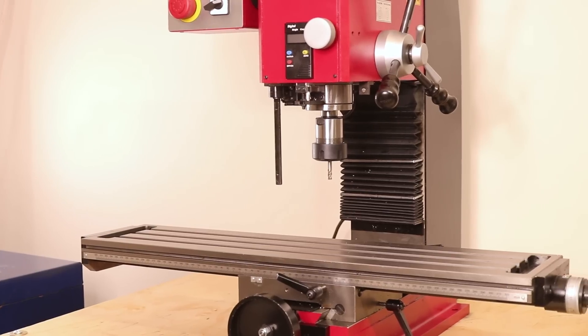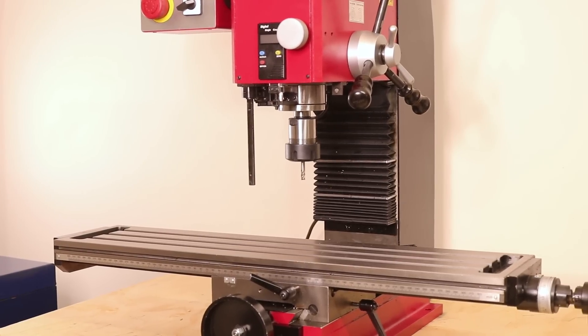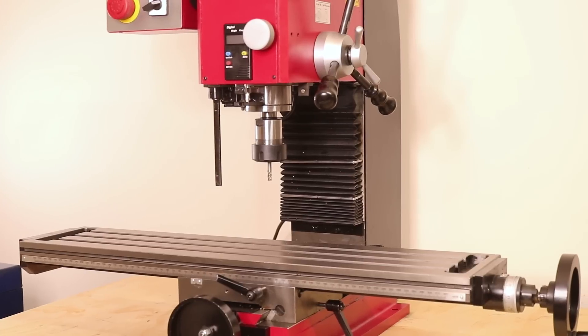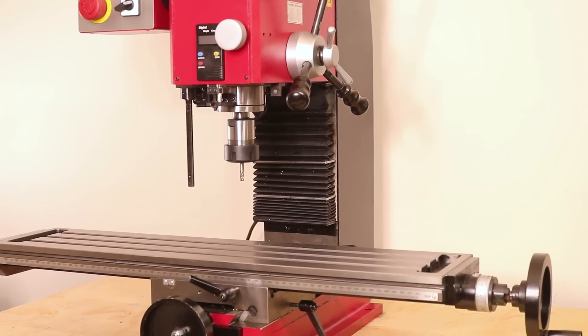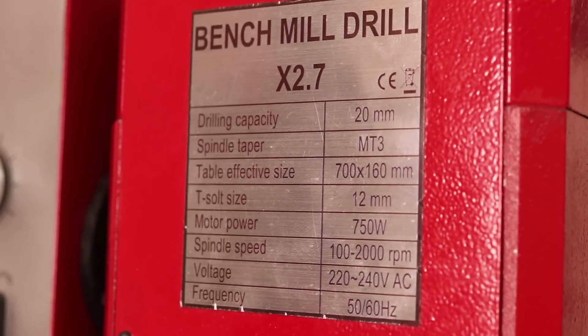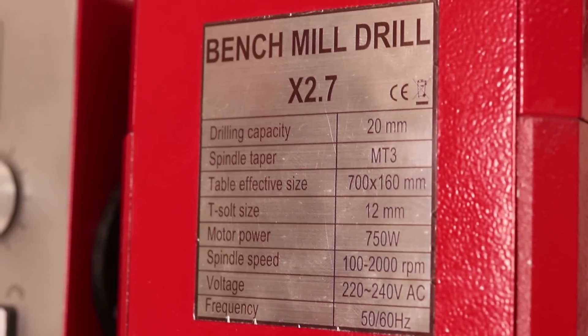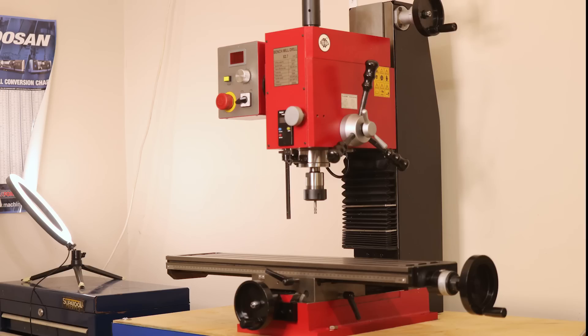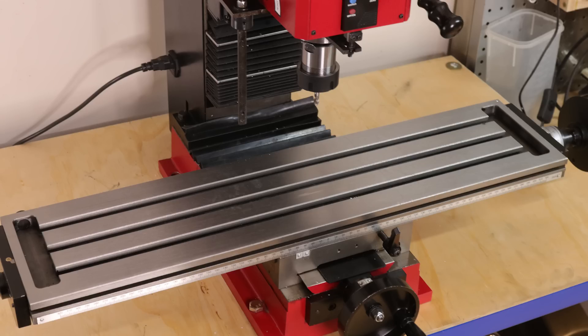But enough of that, let's focus on what we're all here for. This is my new milling machine. More specifically, it's a Sieg 2.7L, the same brand as the lathe you're all probably familiar with. Just to give you a quick rundown on the specs, it's 750 by 620 by 880. It's fitted with the extra-long table, that's 700 by 160.